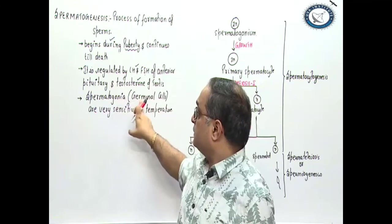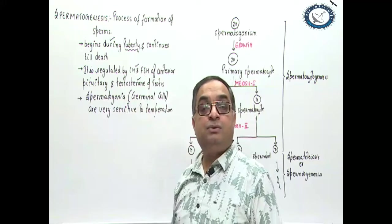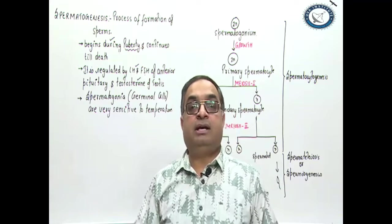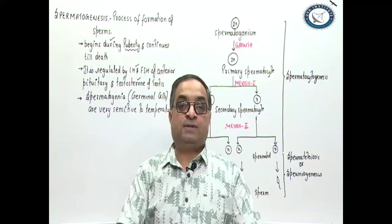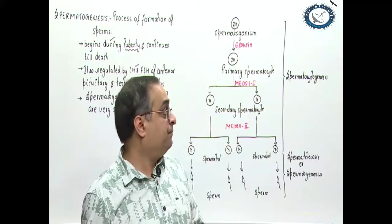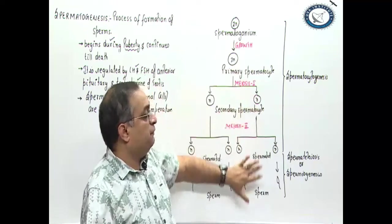The germinal cells of the spermatogonia, they are very sensitive to temperature. That is the reason that testes are located outside the main body cavity in scrotum because scrotum provides a favorable temperature for healthy sperm production. Now, as you can see in this flow chart,